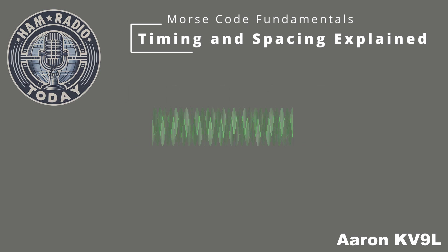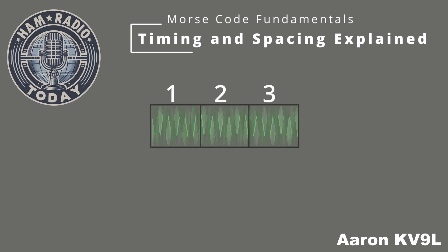Now I'll show you the letter T in Morse code, which is represented by a single dah. As you can see in the waveform, the dah is a long, steady tone that lasts three times the duration of a dit. Its simplicity makes T one of the easiest letters to recognize and a great starting point for understanding Morse code timing.